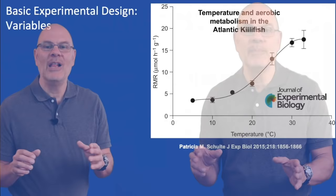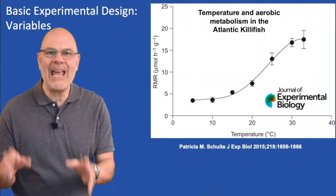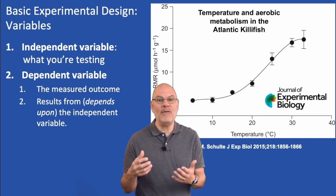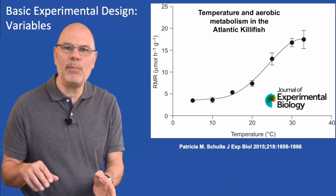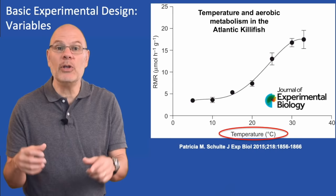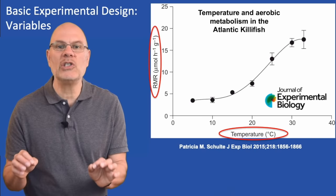Let's start with how experiments work. Experiments have an independent variable and a dependent variable. The independent variable is what you're testing. The dependent variable is the measured outcome that results from whatever effect the independent variable brings about. Here's data from a study that measured the effect of temperature on respiration in a small species of fish that lives in the Atlantic Ocean. In this study, the independent variable is temperature.